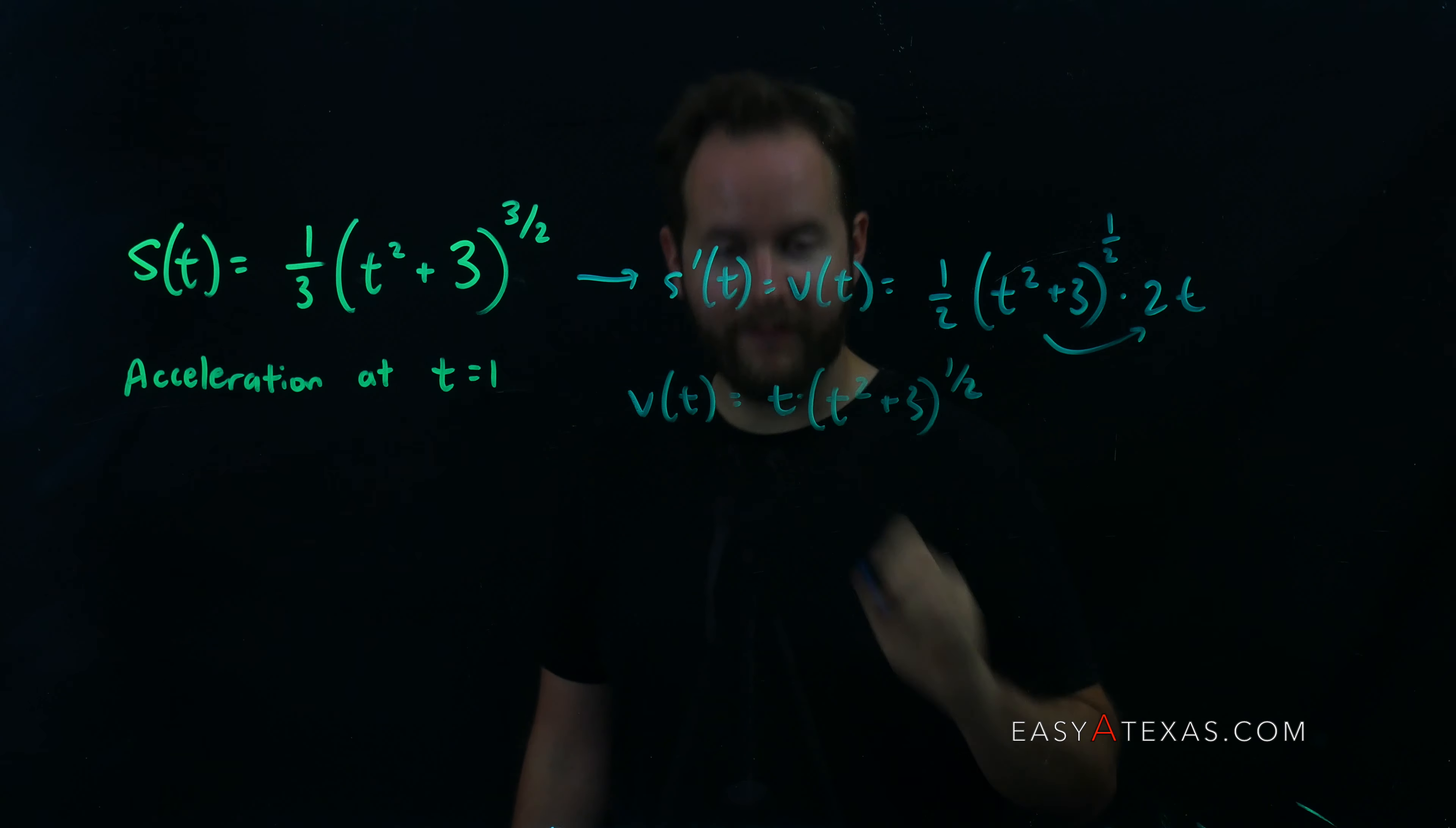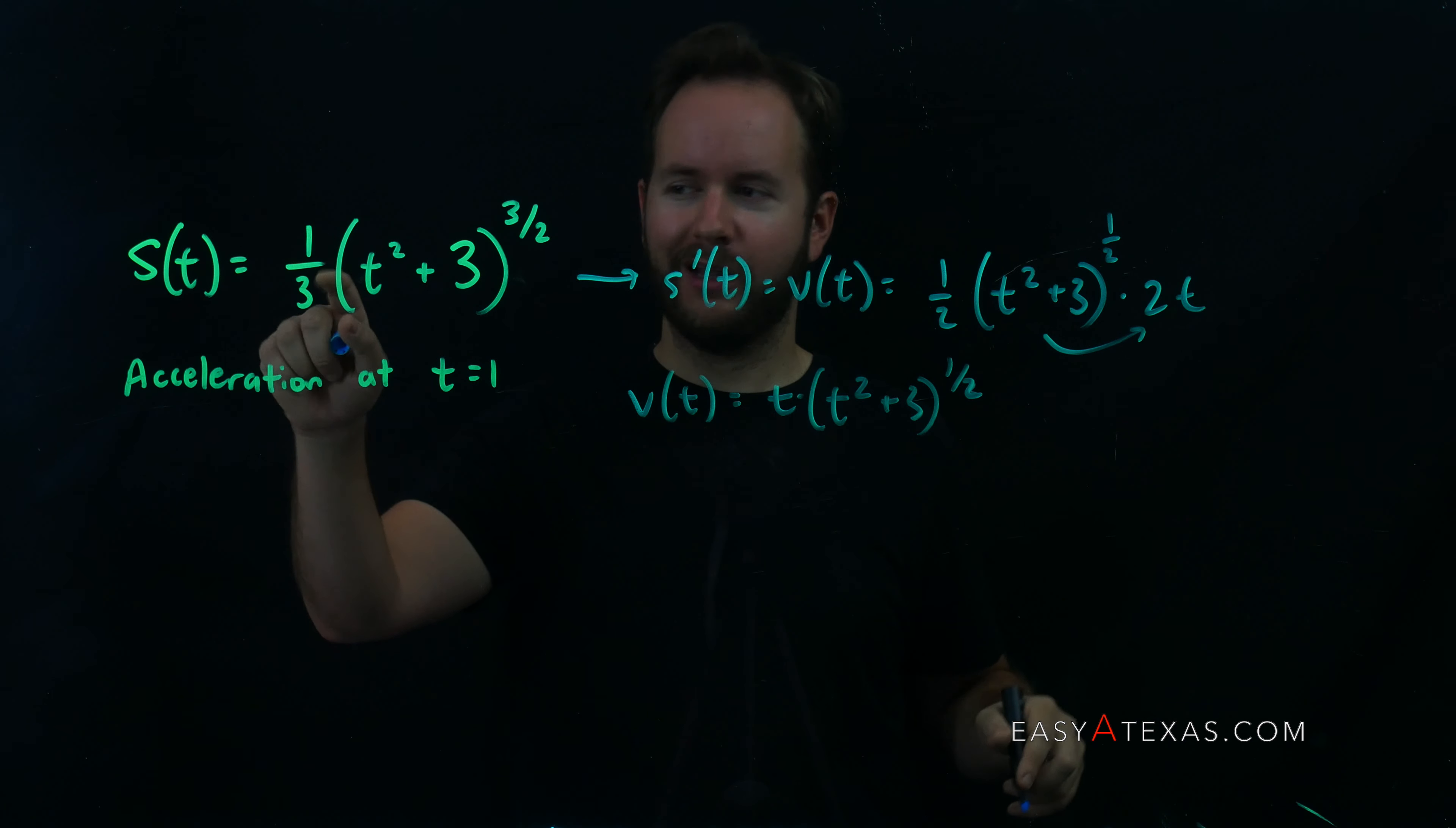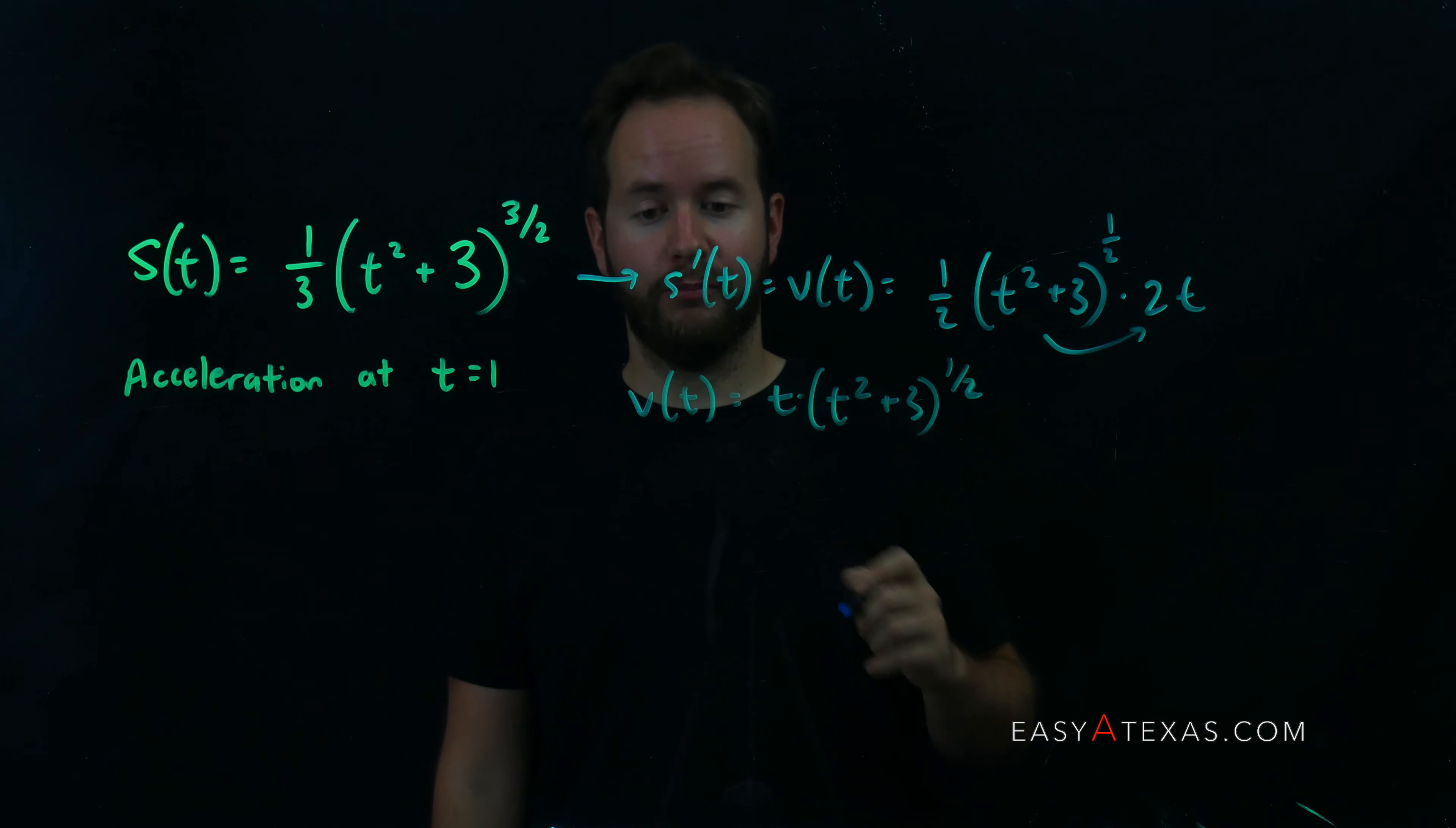Unfortunately, this time we have a product. We didn't have a product before, sure we had a product between one third and a function, but a constant doesn't count as a product. It's between two variables where we have to use the product rule, so t and this t squared plus three to the one half requires we use the product rule.